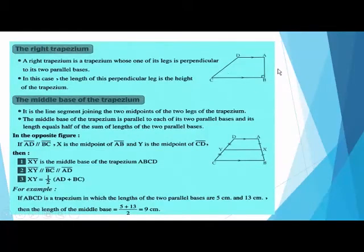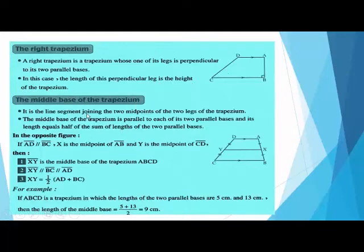The right trapezium has a right angle, and the perpendicular leg is called the height, not the leg. A right trapezium is a trapezium in which one of its legs is perpendicular to its parallel bases, so the length of that perpendicular leg is the height of the trapezium. The middle base of the trapezium is a line segment joining the midpoints of the two legs, and it is parallel to each of the two parallel bases.